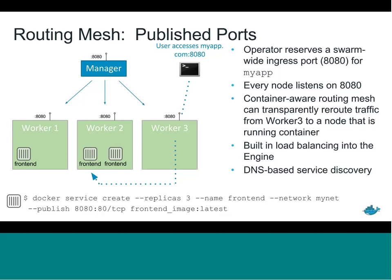We also have built-in load balancing: requests will round-robin between the three instances of frontend to load balance traffic. And we have DNS service discovery — within an overlay network, you can do a lookup on the name 'frontend' or 'frontend.mynet' and you'll get a virtual IP that round-robins traffic between one of those three frontend instances.